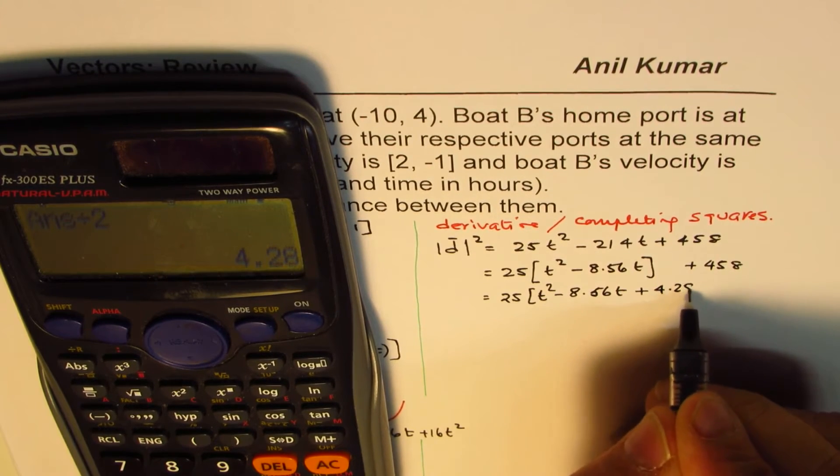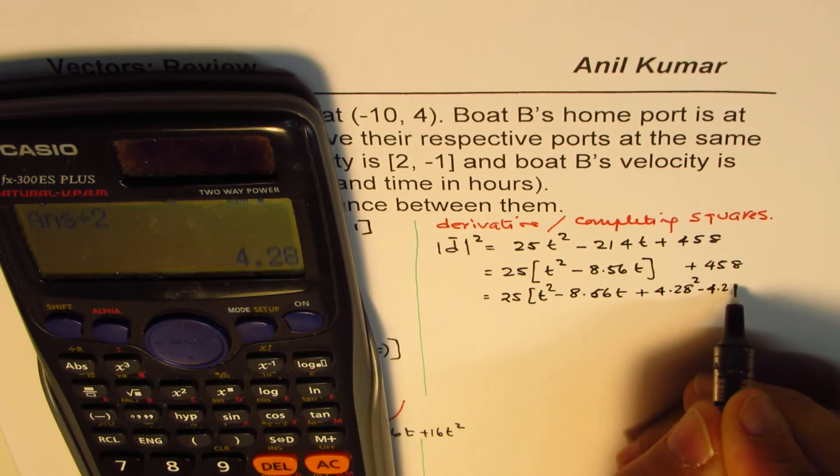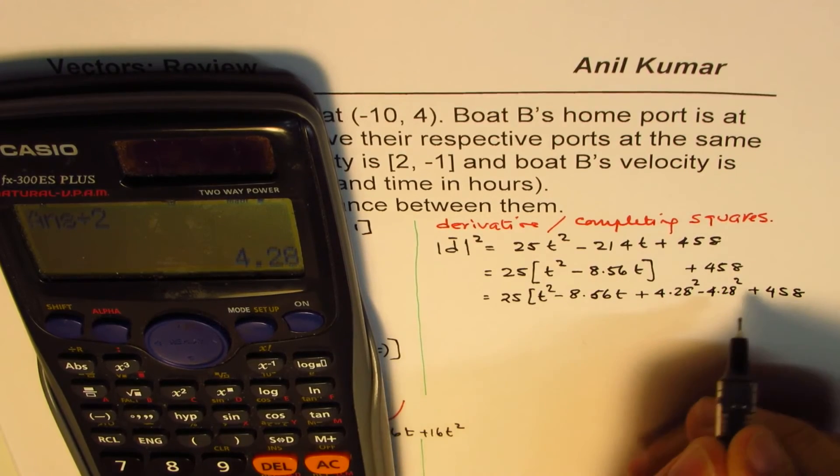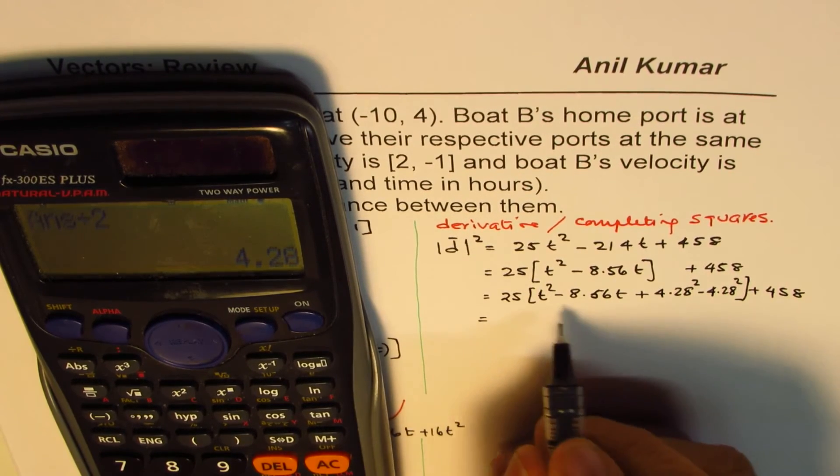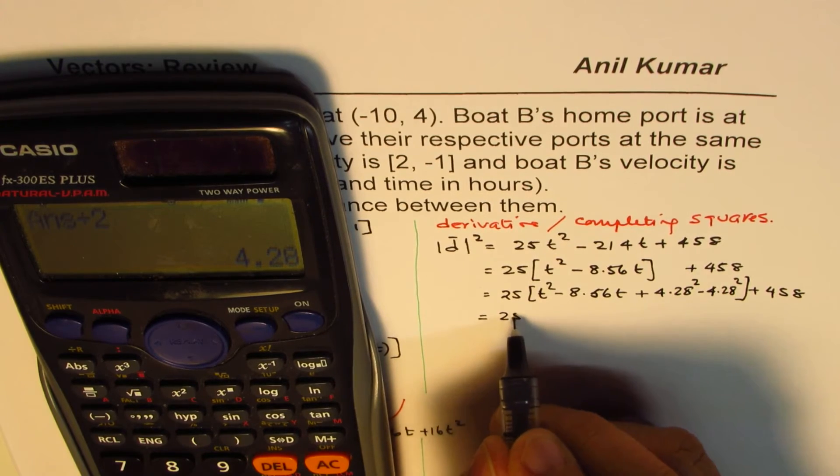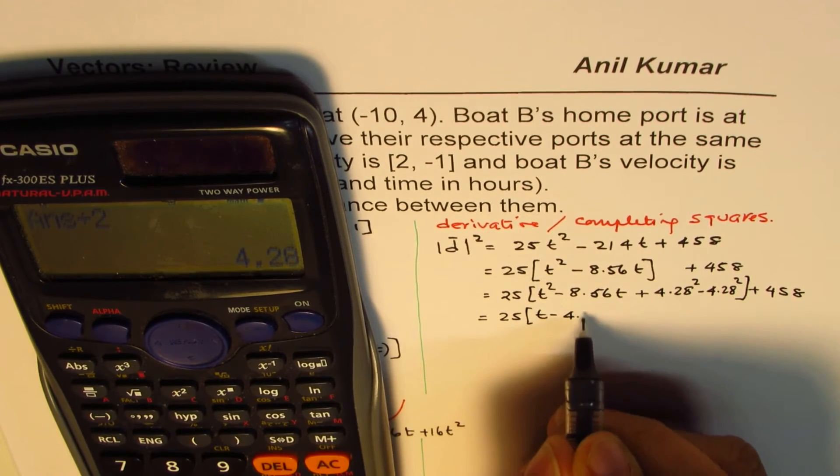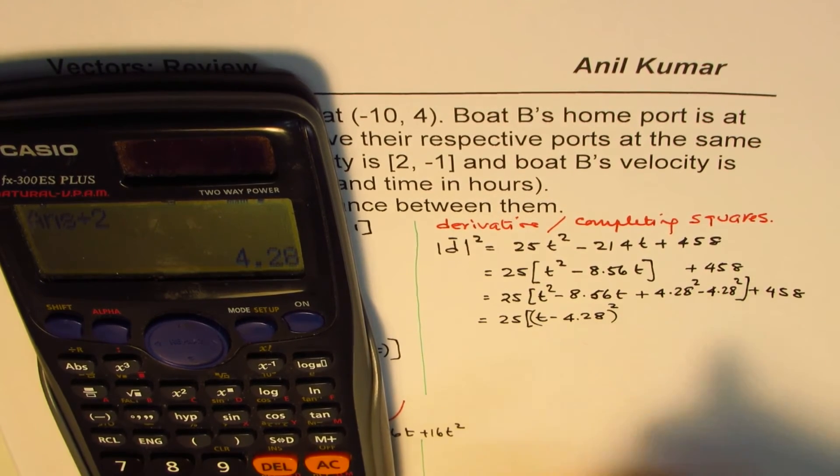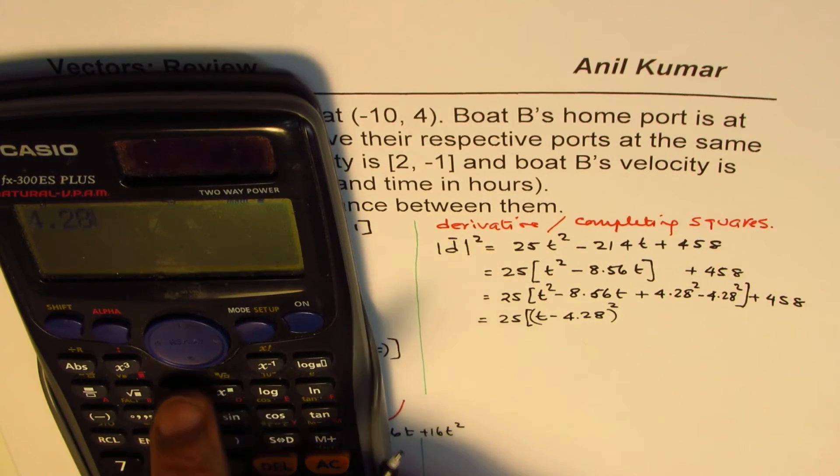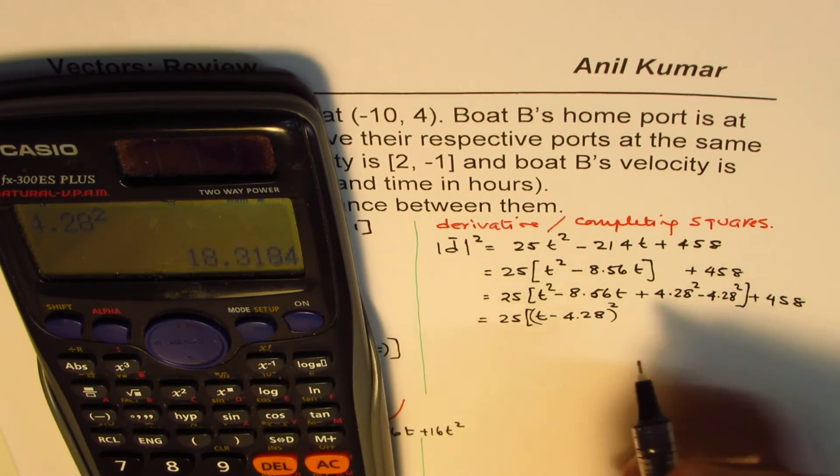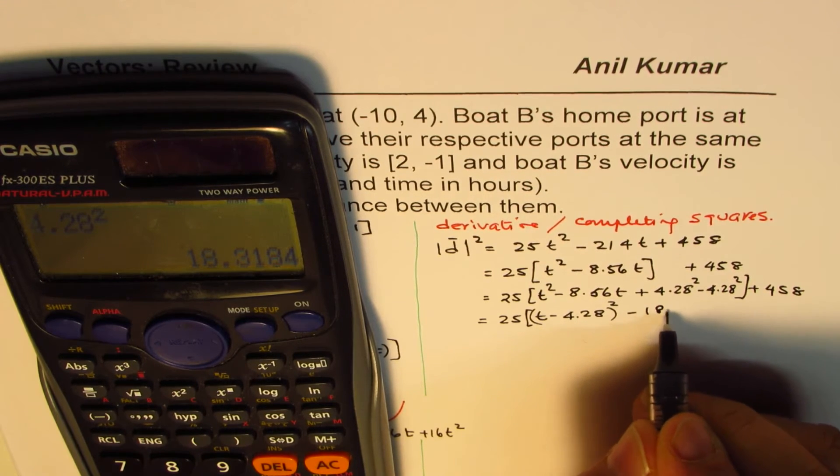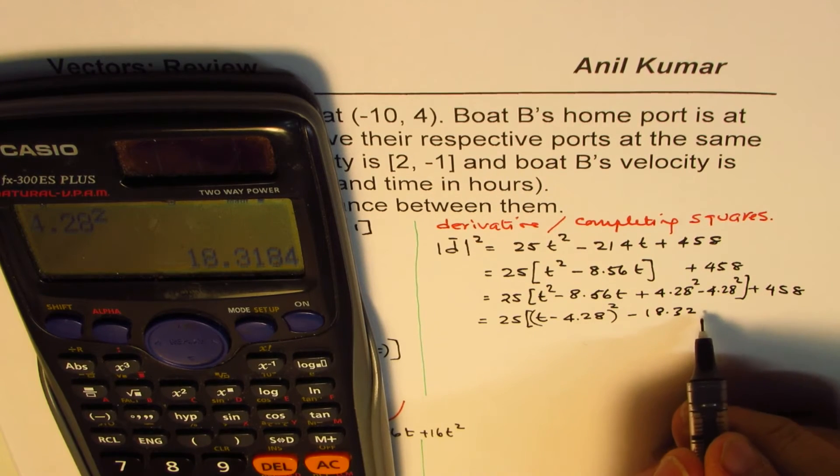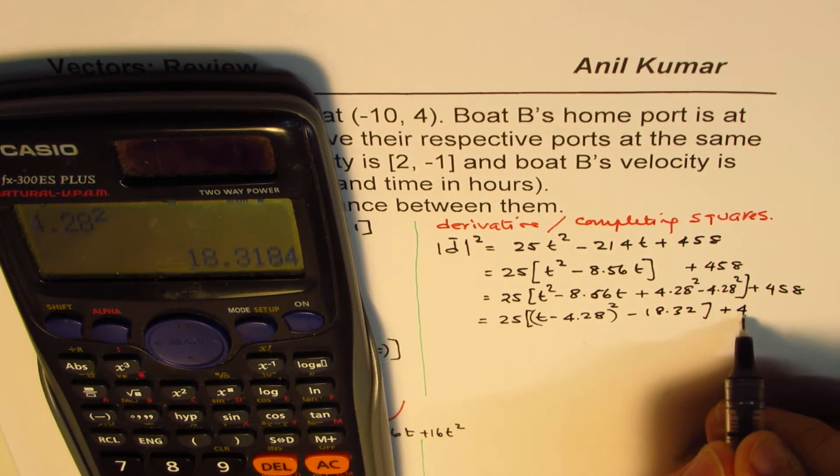That one is a perfect square. So we get 25(t - 4.28)². And here we have square of 4.28. 4.28² equals, let me write this as minus 18.32, well let's use this square value. Plus 458. Let's open the bracket. So we get 25 × (t - 4.28)² minus, so we'll do 25 × 4.28².